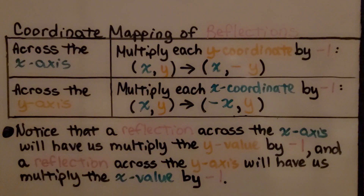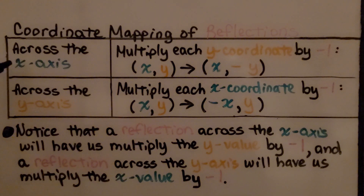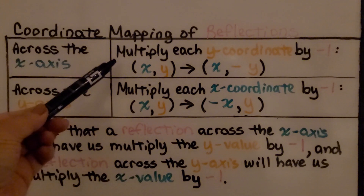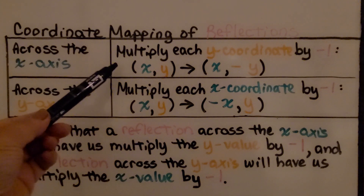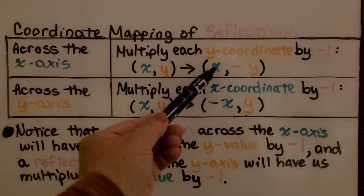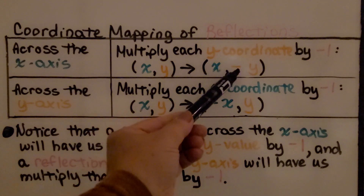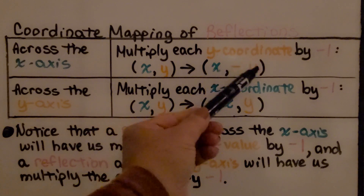Here are the rules for coordinate mapping of reflections. If we're reflecting across the x-axis as our line of reflection, we're going to multiply each y-coordinate by negative 1. Our x will stay the same, but our y-coordinate will be multiplied by negative 1.